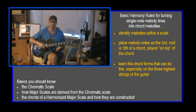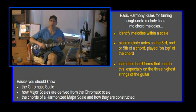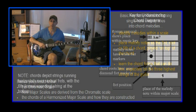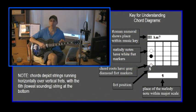One thing you should keep in mind is that in a harmonized key, you need to know whether the chords are major or minor. The one chord and the four chord are major chords — major sevenths. The two, the three, and the six chords of a key are minor seventh chords. The five chord is a dominant seventh, and the seven chord is a minor seventh flat five. That's just the way harmonized chords work.